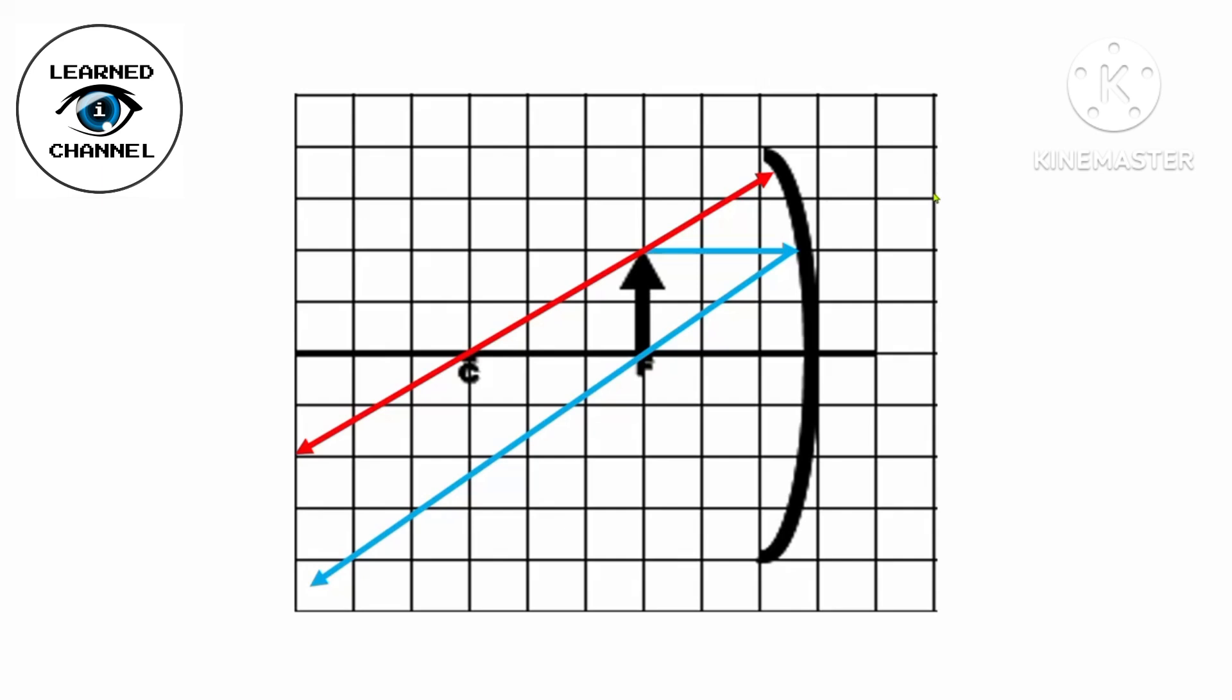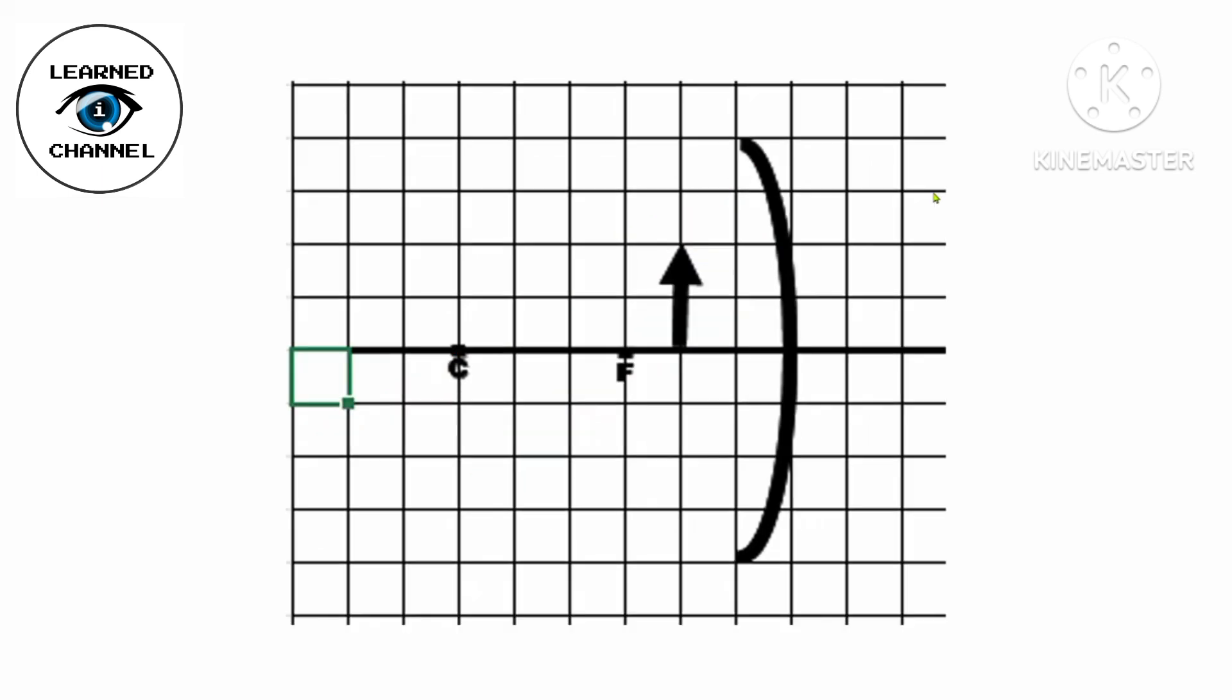Now, what if the object is placed between F and the mirror? As you can see, there is no intersection in front of the mirror, but if we extend it on the other side of the mirror, there will be an intersection. The characteristics of the image formed is at the back of the mirror, upright, enlarged, and virtual.